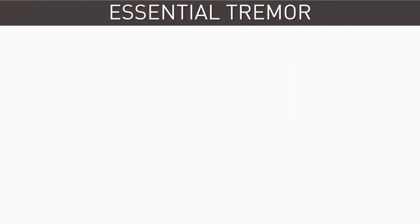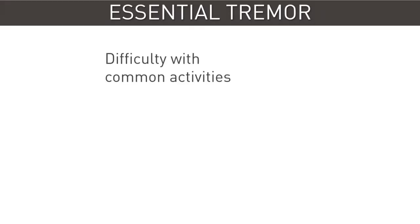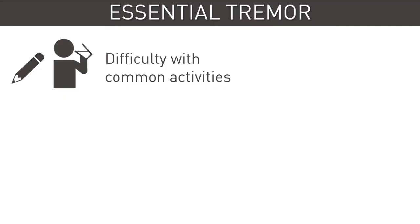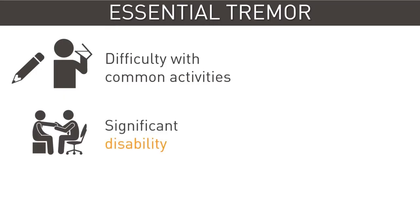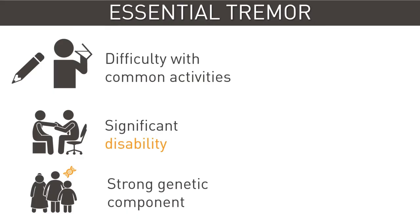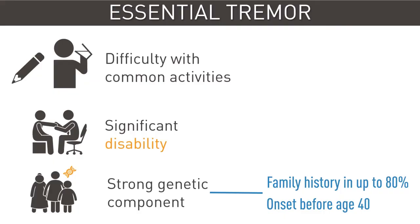Essential tremor is the most common cause of action tremor, and affected individuals may have difficulty with common activities such as writing or drinking from a glass. Essential tremor progressively worsens and can cause significant disability. It is often referred to as familial tremor due to its strong genetic component, with a family history of tremor in up to 80% with onset before age 40.